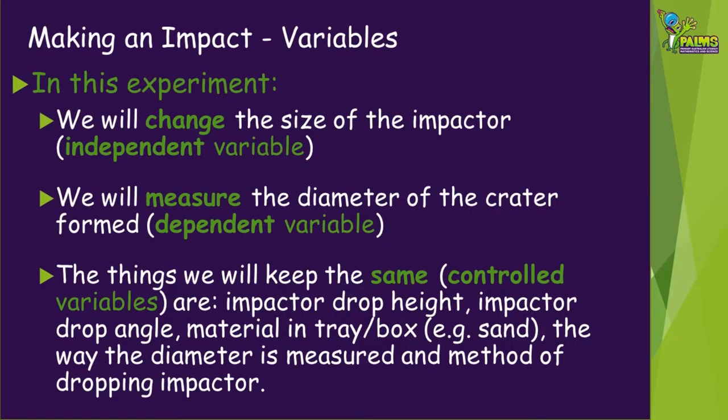We're going to be carrying out a scientific experiment so we need to consider our variables. In this experiment we're going to be changing the size of the impactor, so this will be our independent variable. Our dependent variable will be the diameter of the crater, as we will be measuring this and it depends on our independent variable.